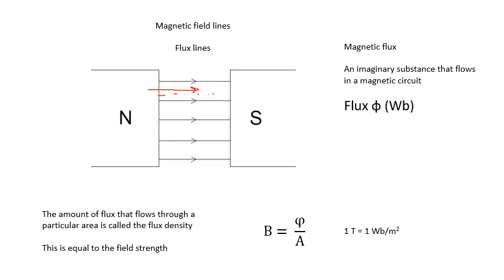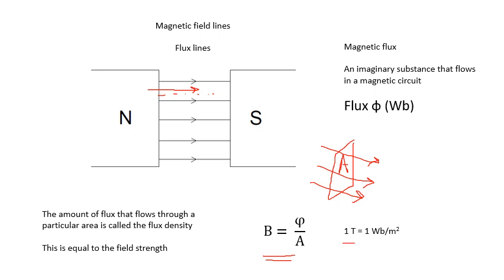The amount of flux that flows through a particular area is called the flux density. If I have a particular area A and you've got all of this flux flowing through, then basically the more flux flows through that area, the bigger the flux density. The flux density is equal to the field strength — in this case it's divided by area, and B equals phi over A. So flux density equals magnetic field strength, meaning a Tesla is the same as a Weber per meter squared. Field strength can be measured in Tesla or in Webers per meter squared.